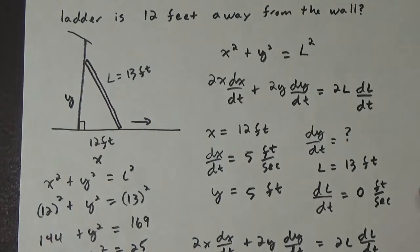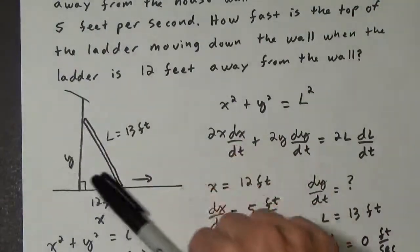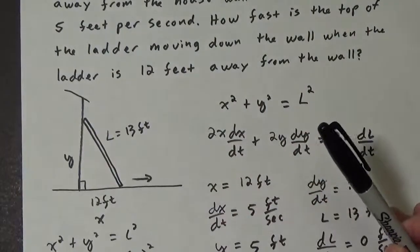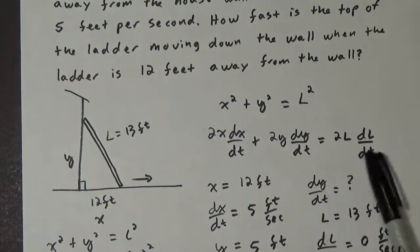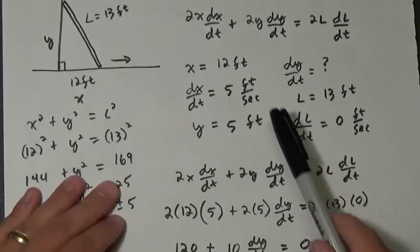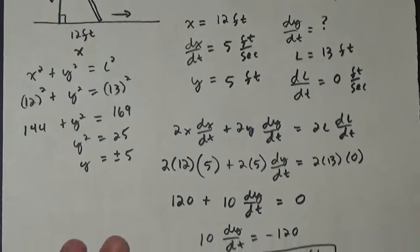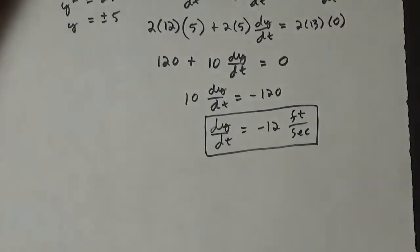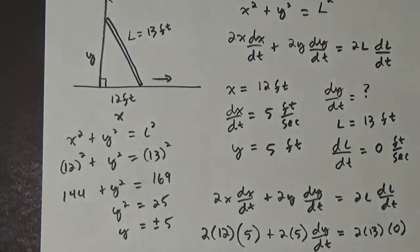And in this problem, we were able to set up a picture of what was going on. We created our, or we figured out the equation that relates everything. We took the derivative with respect to time. We figured out our values, we had to do a little side work to get one of the values, and then we substituted in our values and we got the rate that the top of this ladder is being pulled down as the ladder is being pulled away.